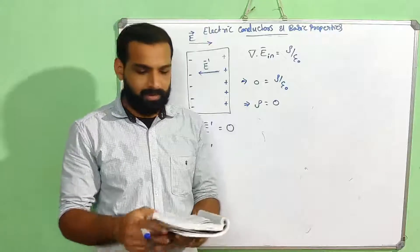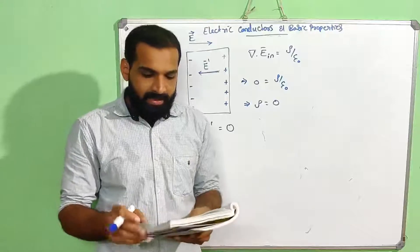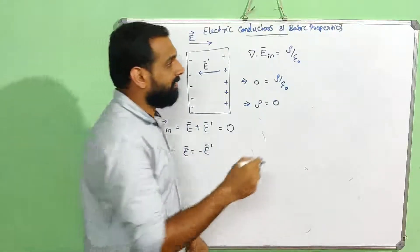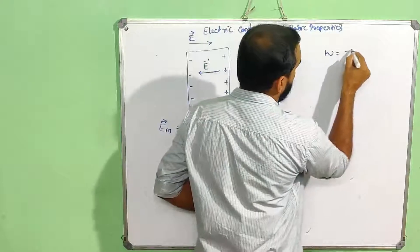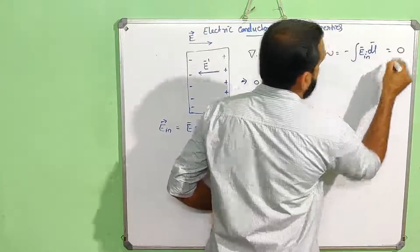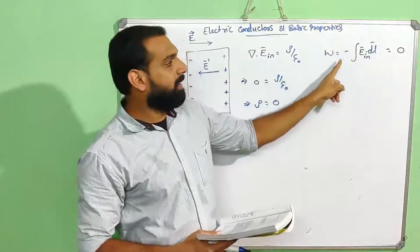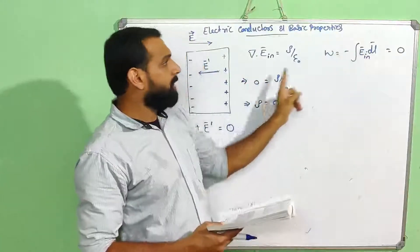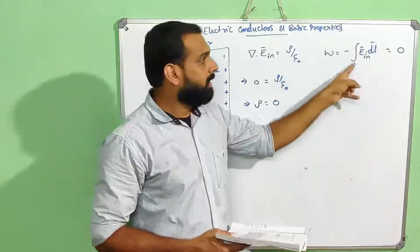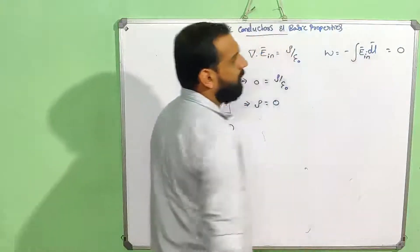Since the electric field inside is zero, we can consider the work done in moving a charge inside a conductor. Work done equals minus integral of E dot dL. Since E_in equals zero, the work done W equals minus integral of E_in dot dL, which equals zero.